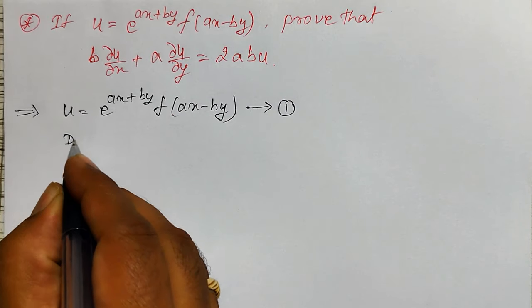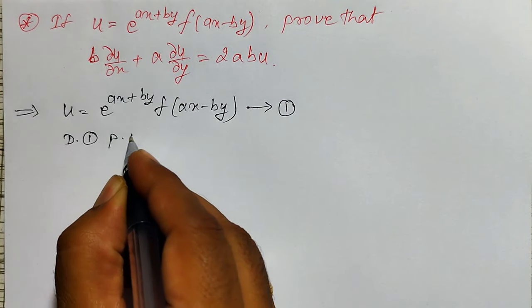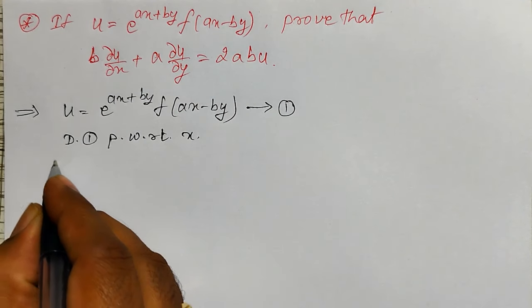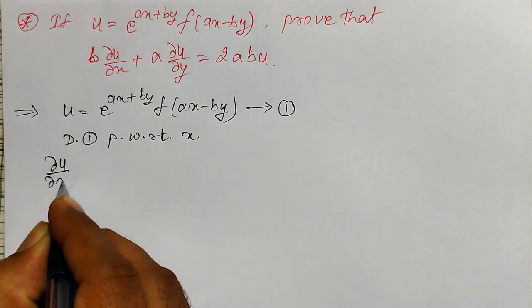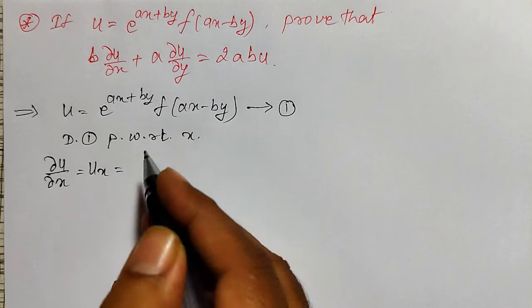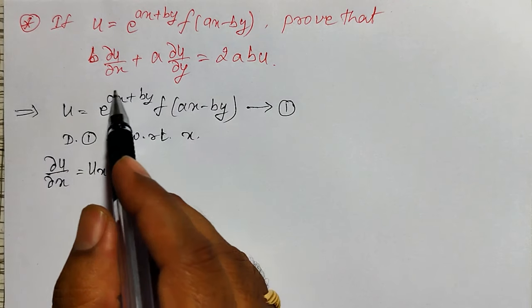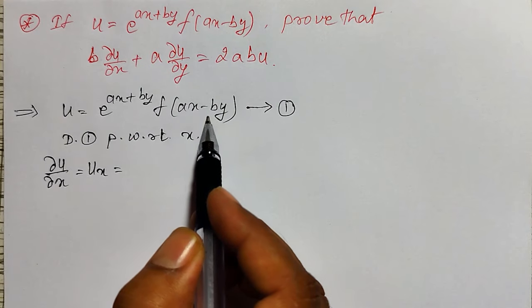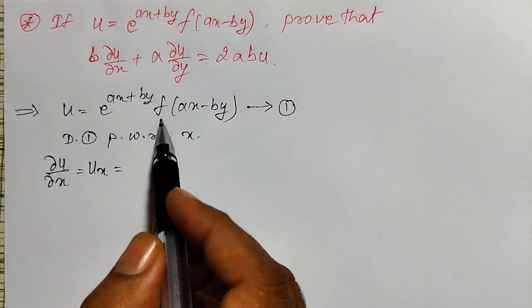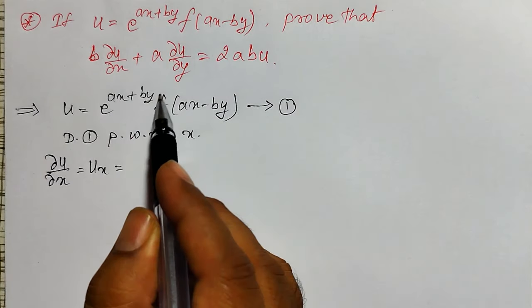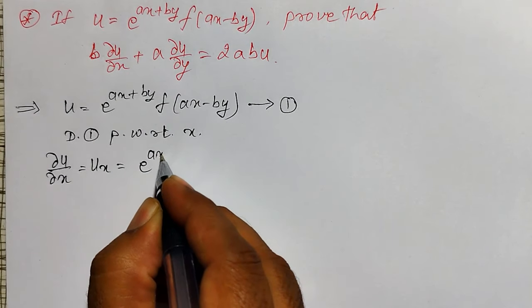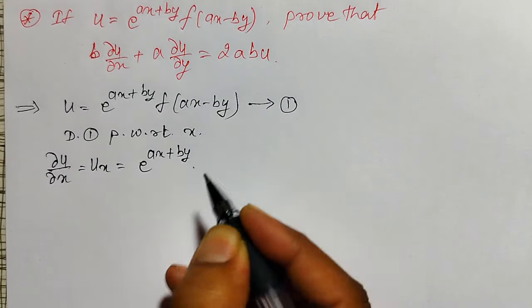Let me differentiate equation one partially with respect to x first. The notation is ∂u/∂x — we pronounce it as 'dou u by dou x', or ux. Now here what you can observe: there is one term e^(ax+by) and this is another term f(ax−by). Both are containing x, therefore we have to apply the product rule for these two functions. So e raised to ax plus by — product rule I am applying.